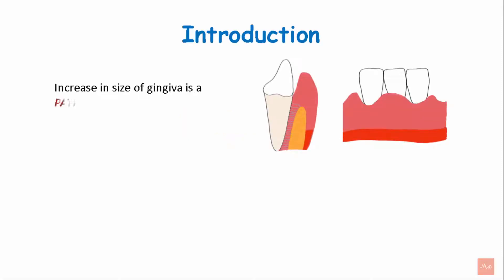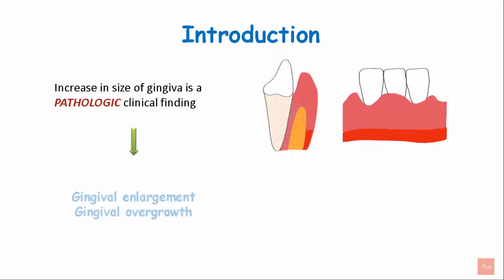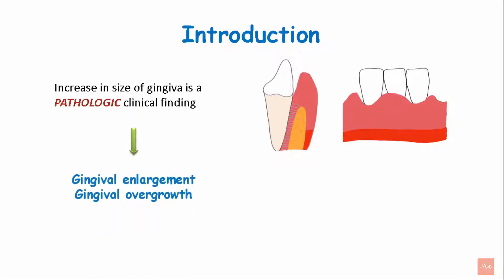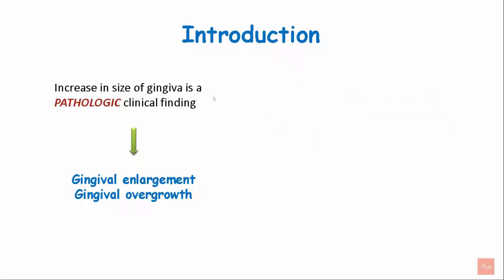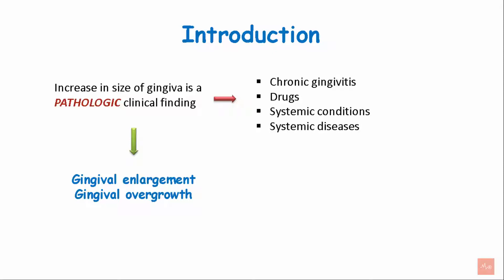Increase in size of gingiva is a pathologic clinical finding, also called gingival enlargement or gingival overgrowth. It can occur due to causes like chronic gingivitis, drugs, systemic conditions, systemic diseases like leukemia, and hereditary conditions like gingival fibromatosis.